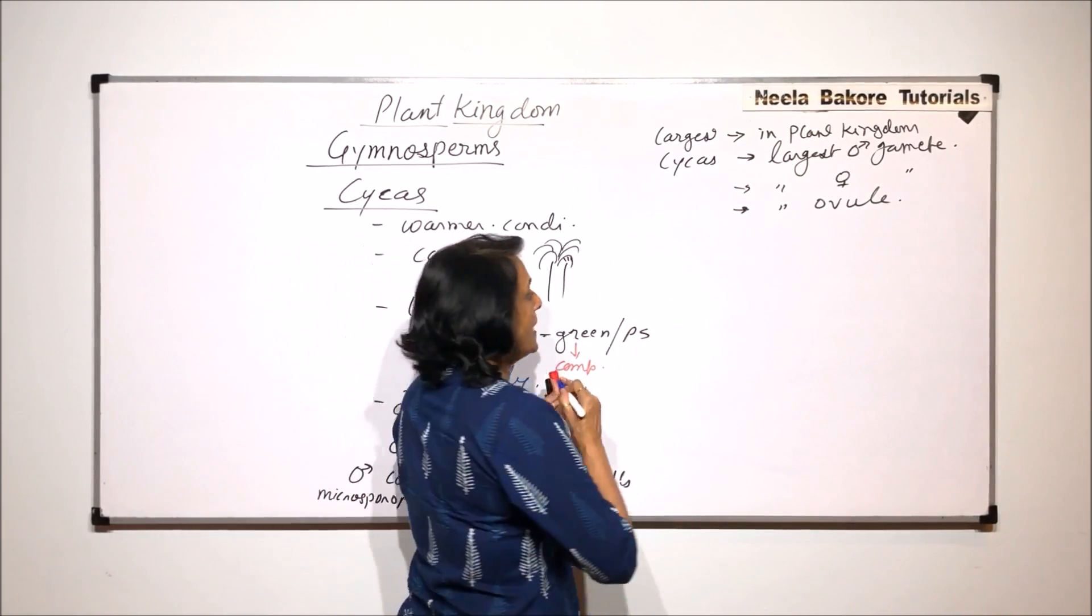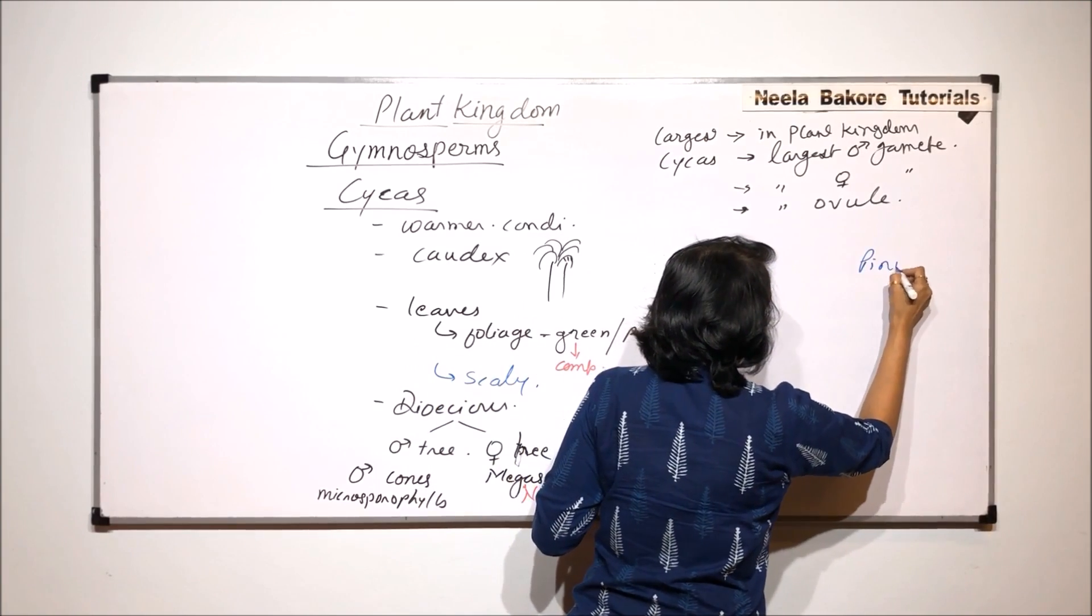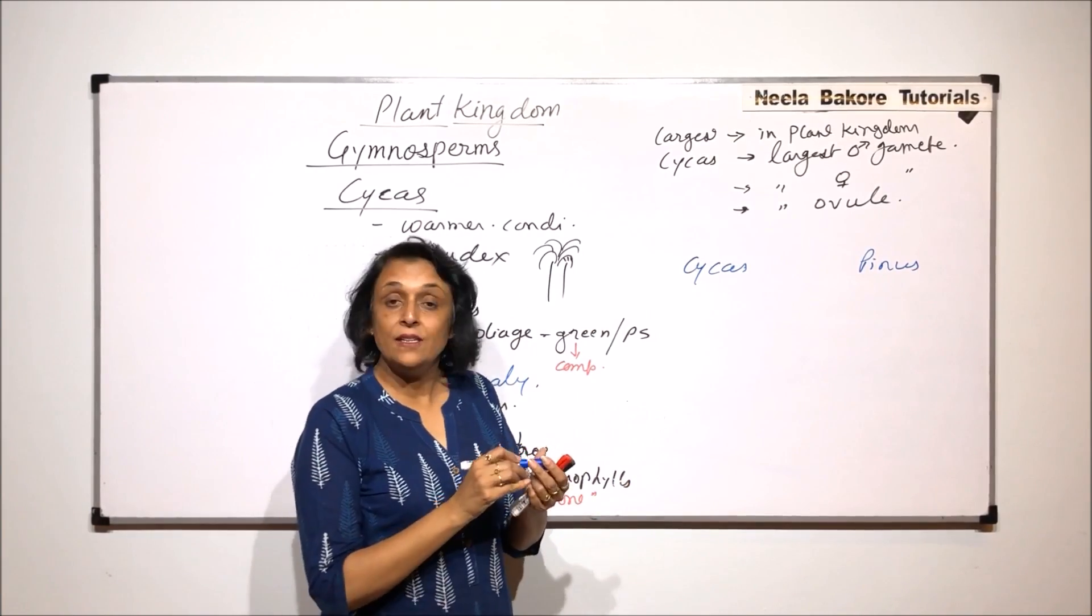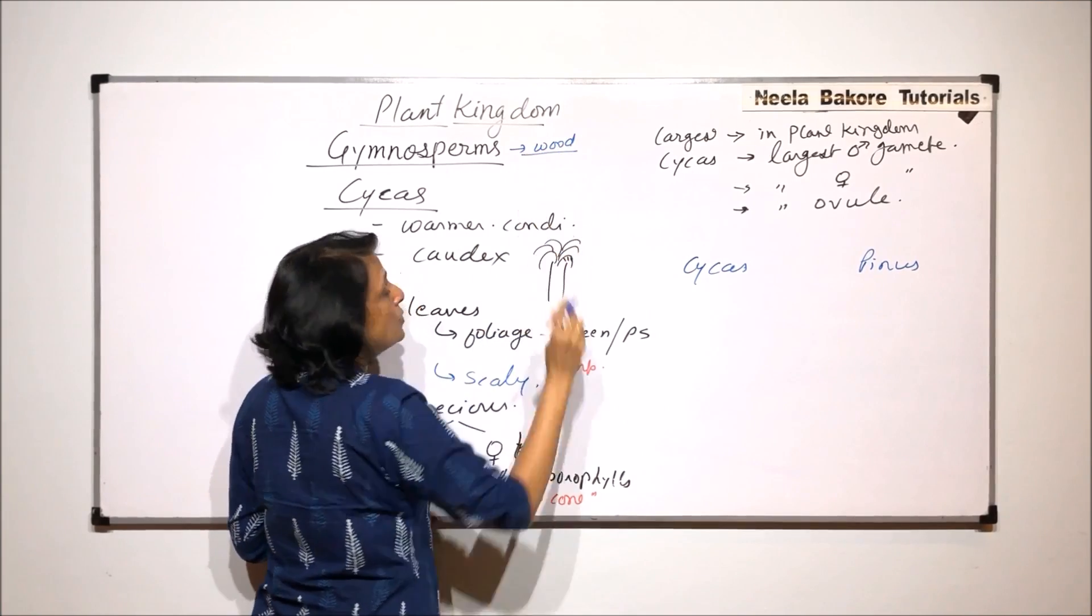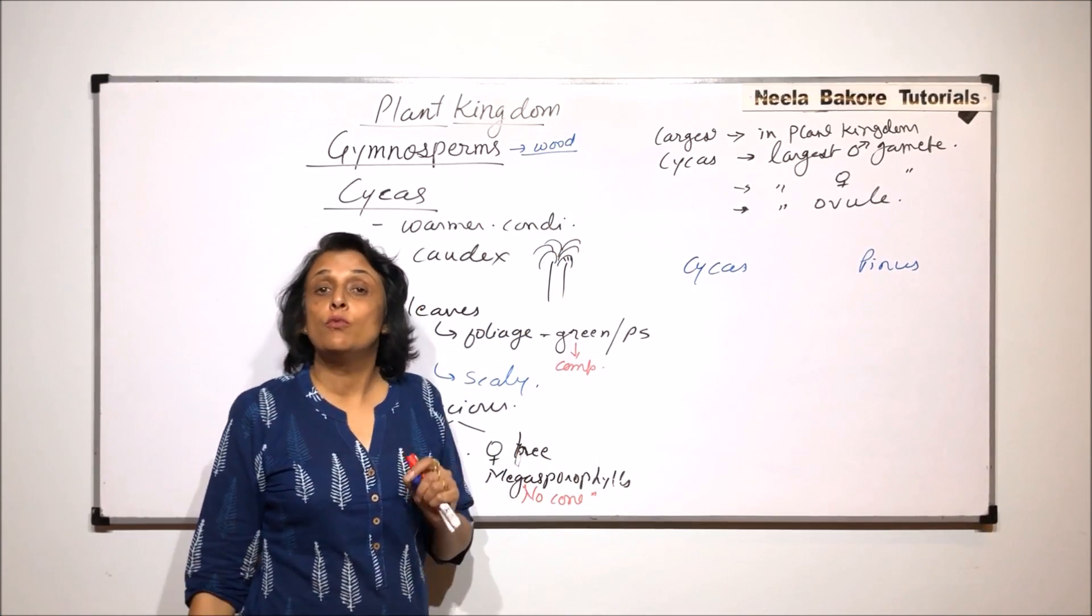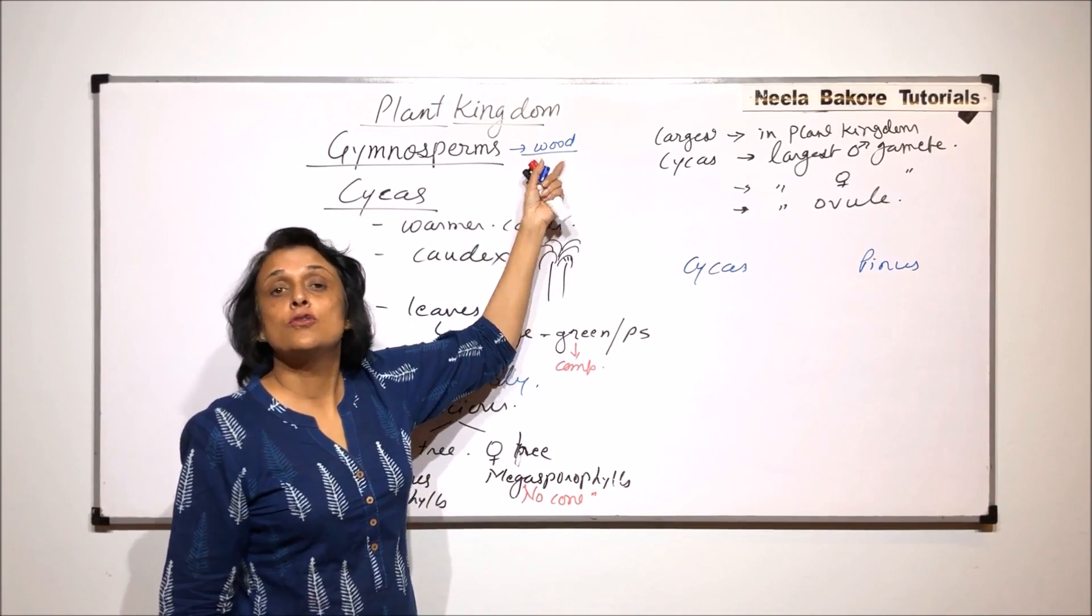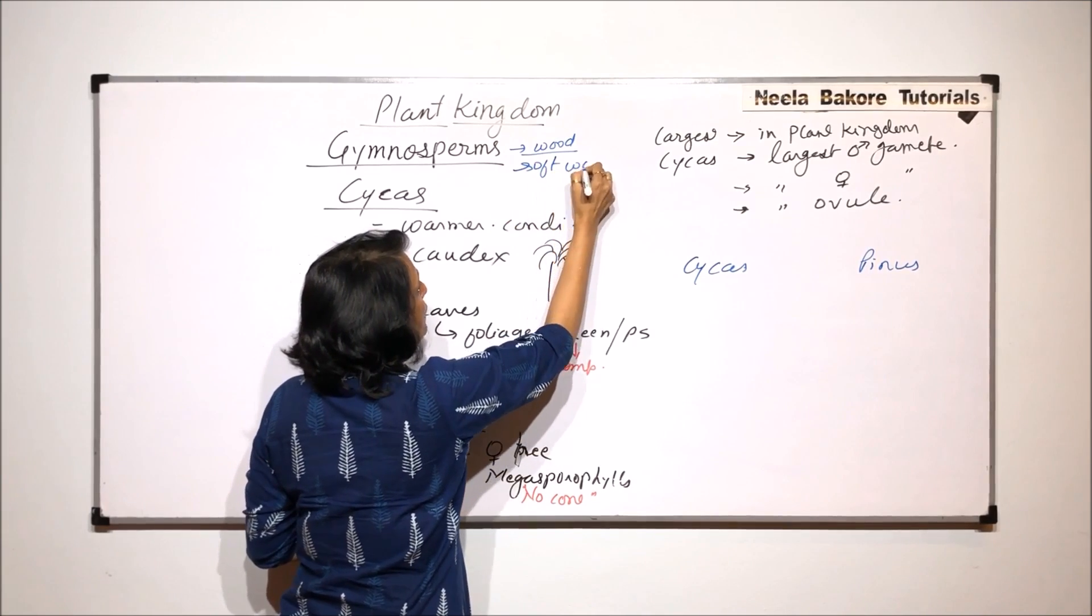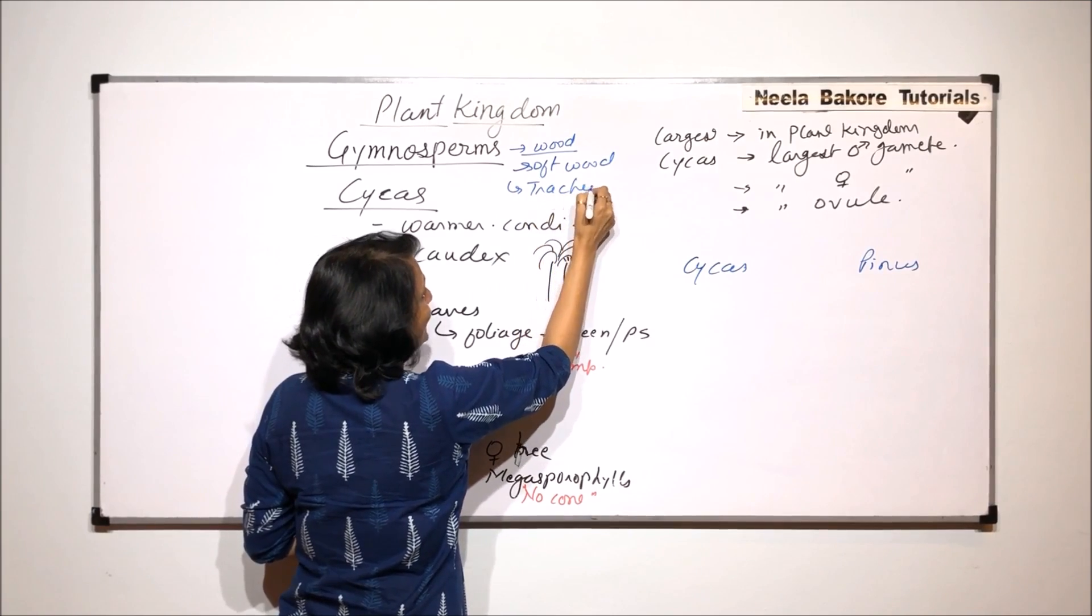Now we will also compare few more things with Pinus. In case of Cycas and we will write Pinus also here. Wood of gymnosperms in general; the wood of gymnosperms when we compare it with the wood of angiosperms, this wood is known as soft wood and the reason we call it soft wood is presence of tracheids.